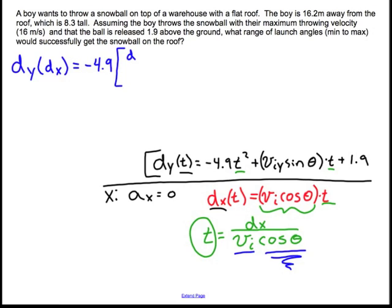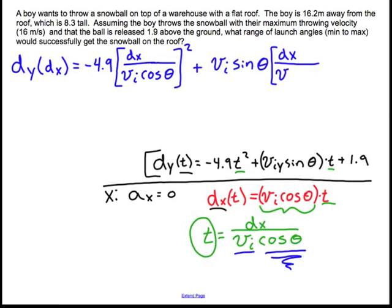It's going to be equal to negative 4.9. Now I need t and it's going to be squared. Well, this is dx divided by vi cosine theta. That full quantity is squared plus vi sine theta times dx divided by vi cosine theta. And now I'm going to add my 1.9.